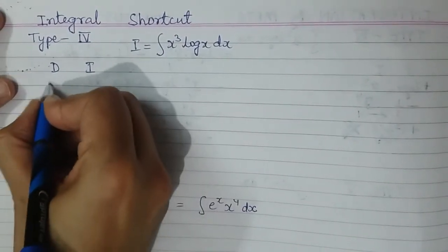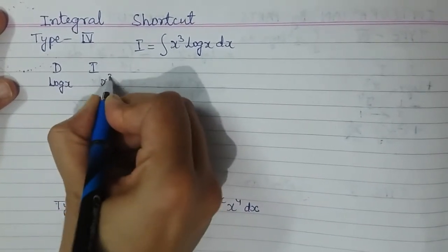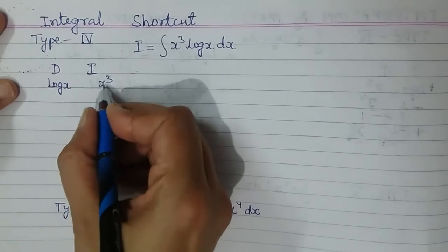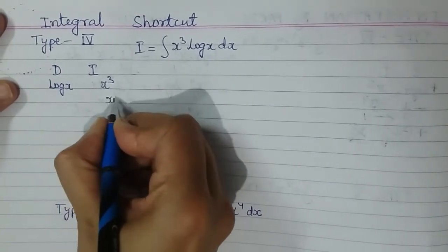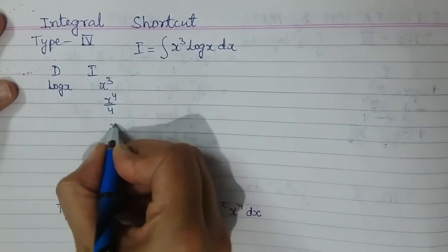So the function that I choose for differentiation is log x, and for integration is x cube. I will keep on integrating this function. x cube integral is x power 4 upon 4. Once again if I integrate, it becomes x power 5 upon 20, and like this it will go on.